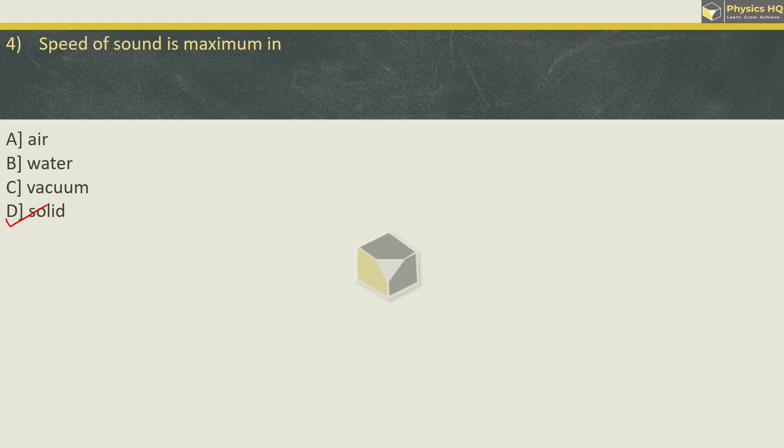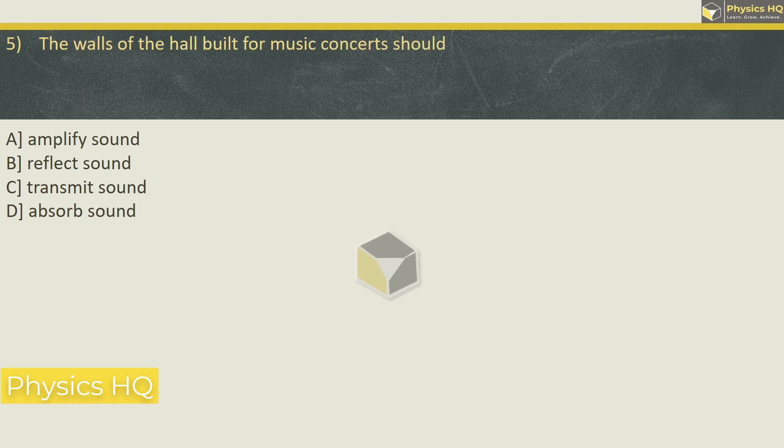Let us check out the next MCQ. The walls of hall built for music concerts should amplify sound, reflect sound, transmit sound, or absorb sound. So the correct option over here is option D, absorb sound.